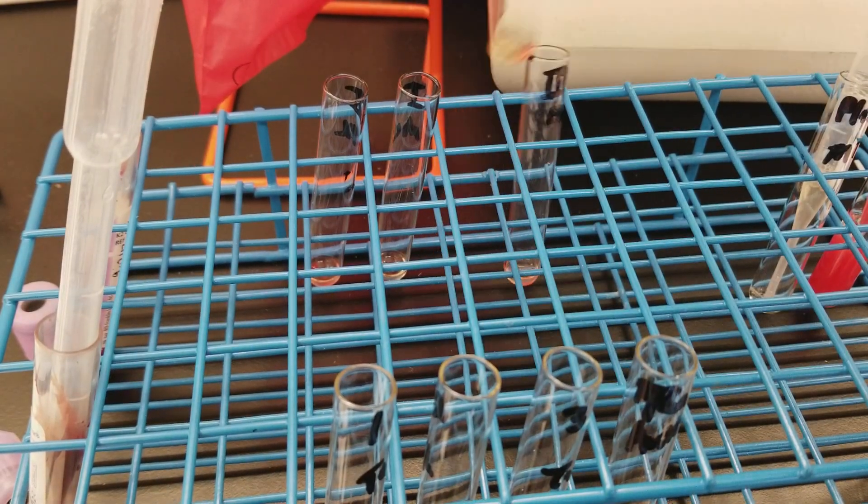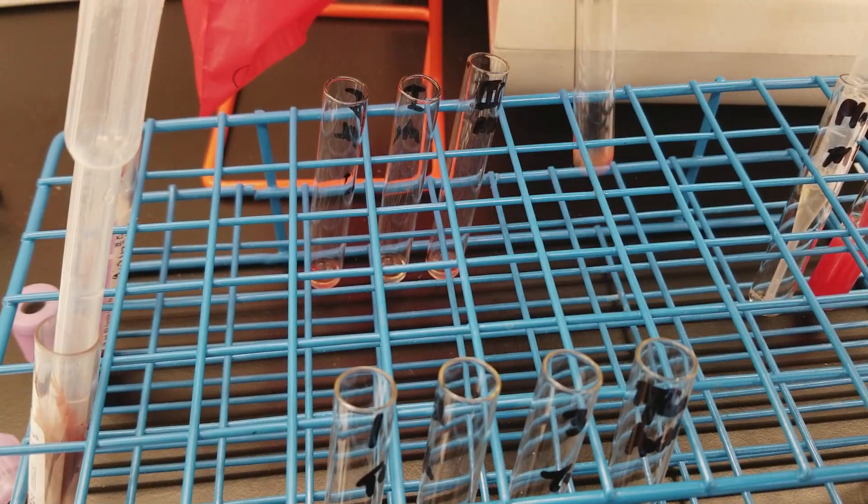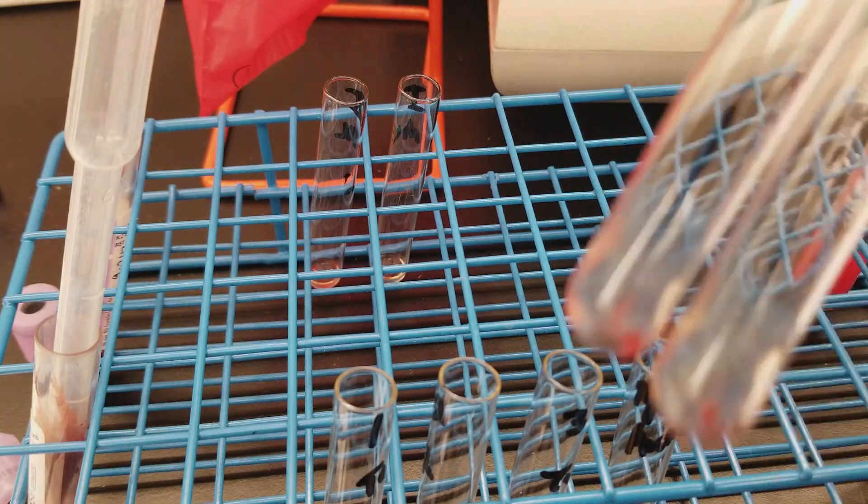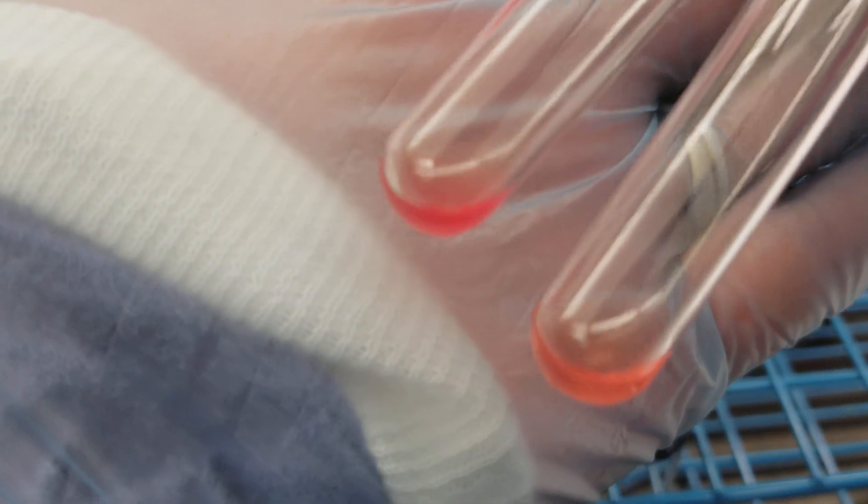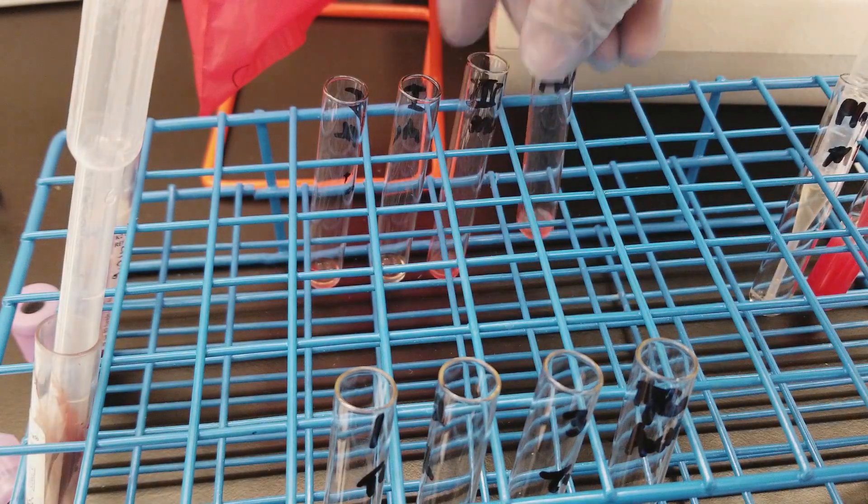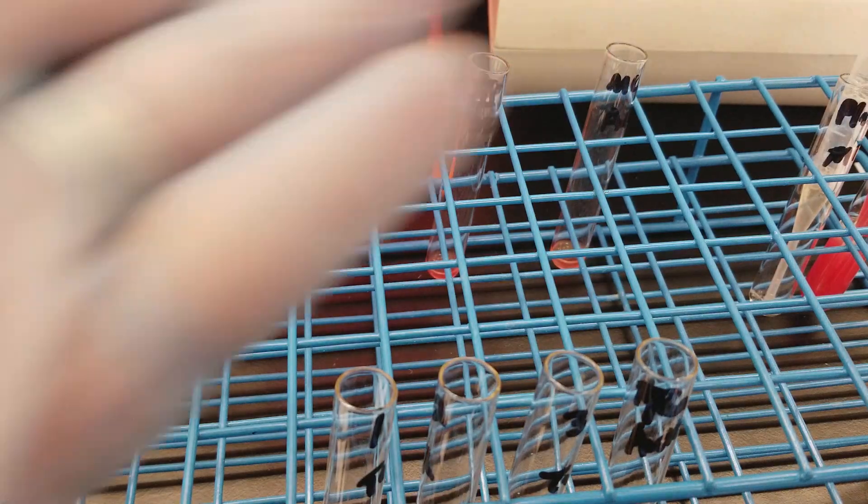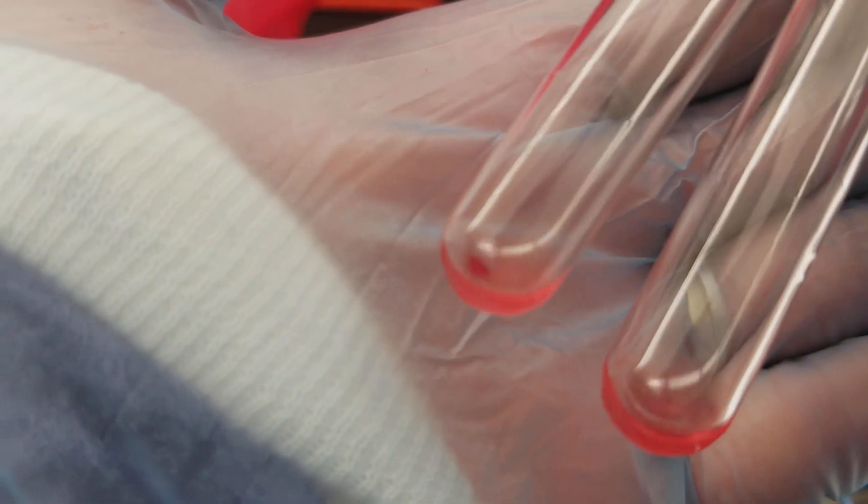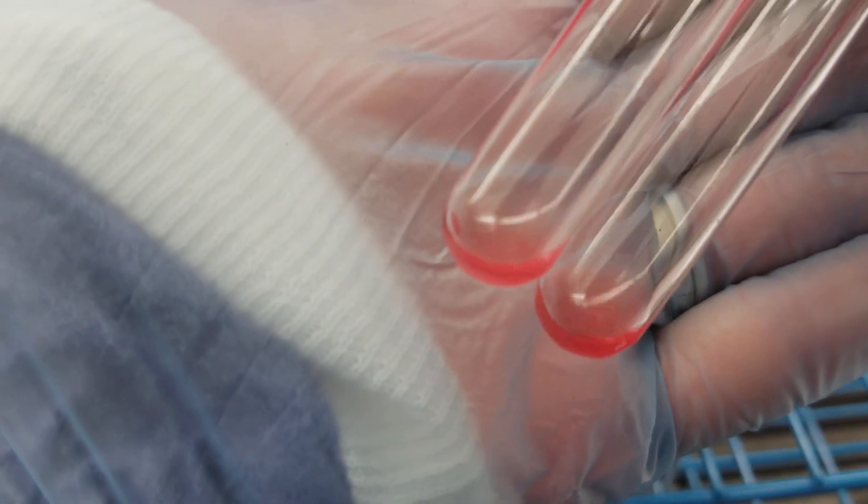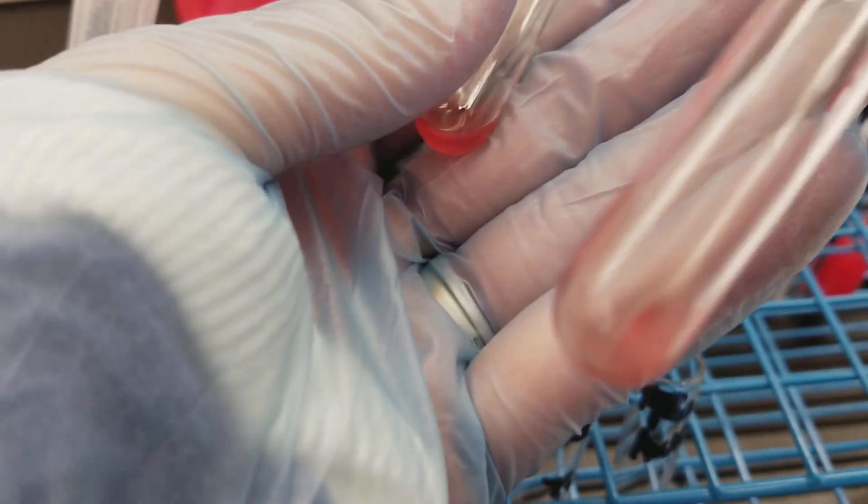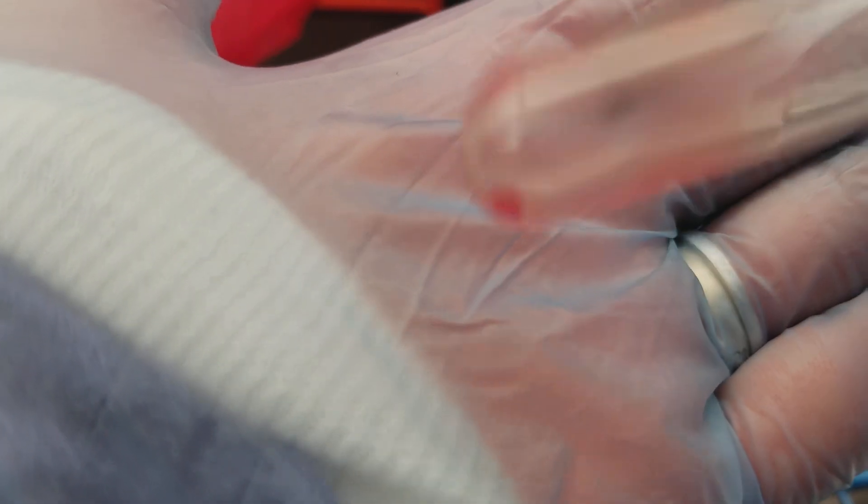So auto controls. Okay, so this is the positive patient - this is auto control and cell three, those are negative. Cell number two is negative, cell number one looks positive.